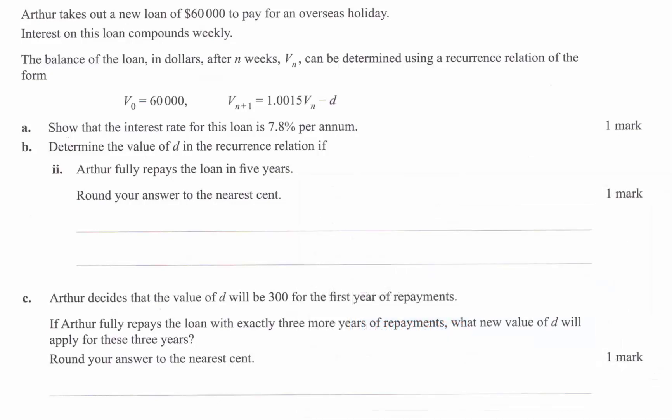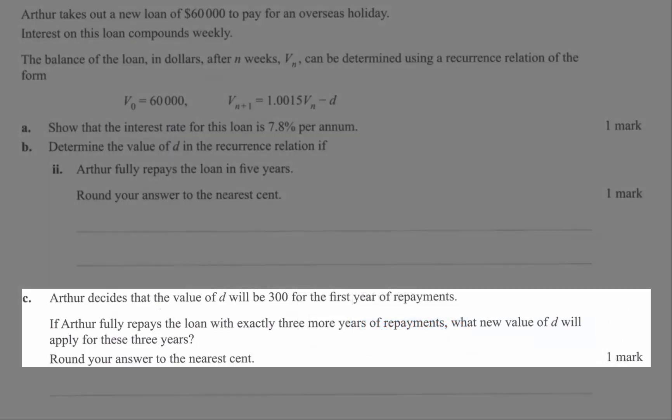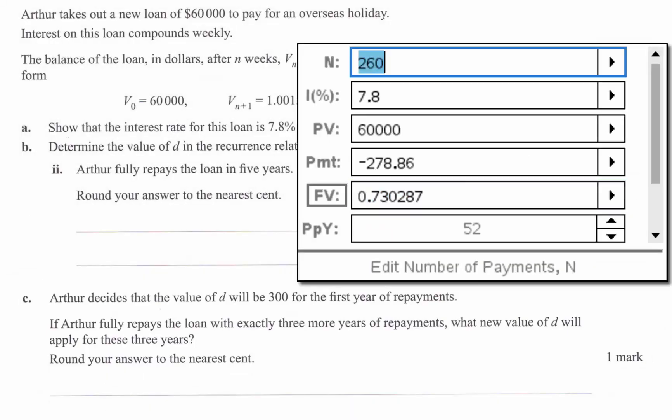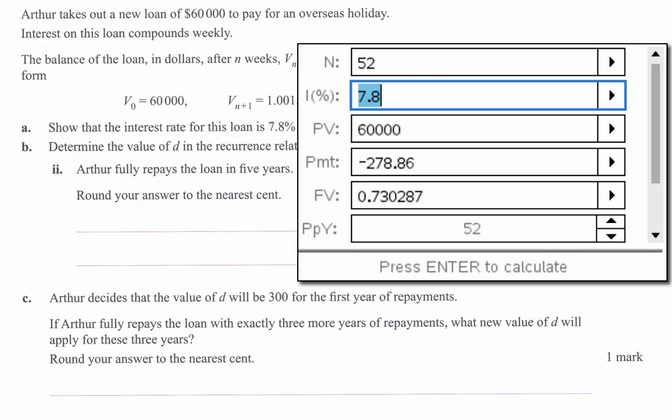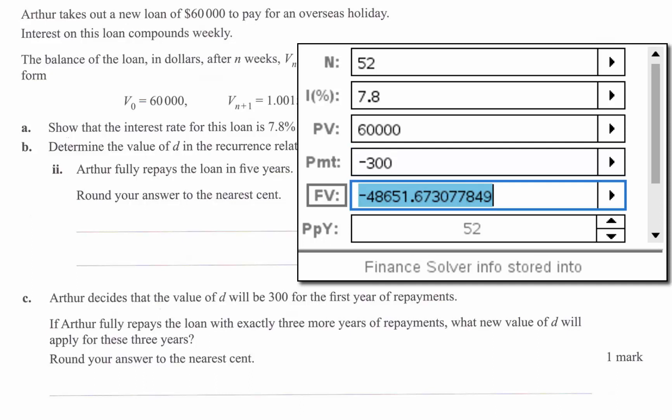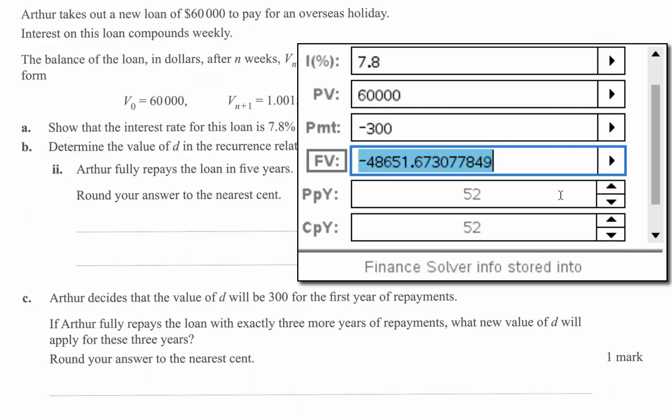In part C it says the value of D will be 300 for the first year of repayments. So if I go back up here for 52 weeks worth it's going to be negative 300 is the payment. We have to work out the future value. After one year the future value is we still owe $48,651 and a whole pile of extra.